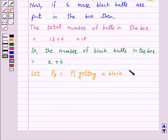So, P2 is equal to X plus 6 upon 18, because now there are 18 balls in the box and out of 18 balls, X plus 6 are black.